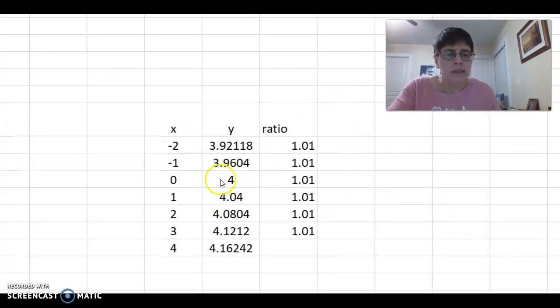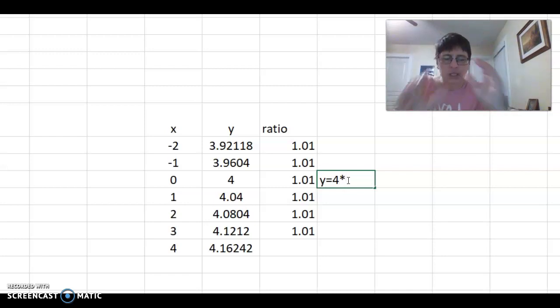It looks like, let's see, here's the four right there at zero. So y equals four times, and then that ratio is the base, 1.01, raised to the x power.